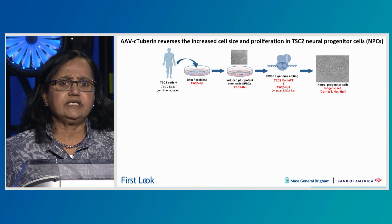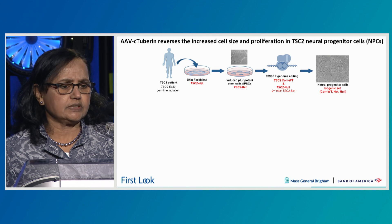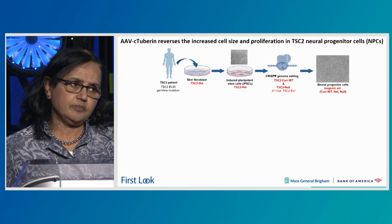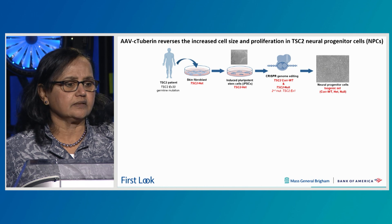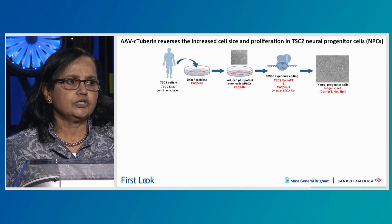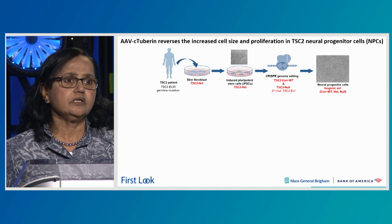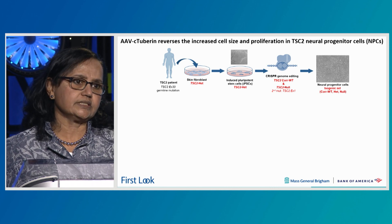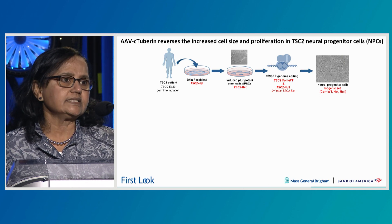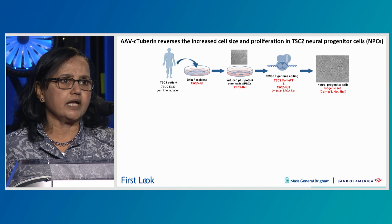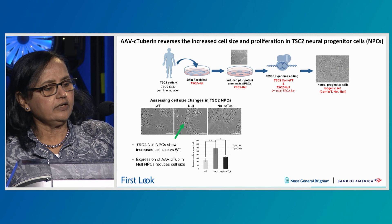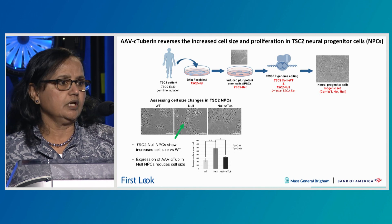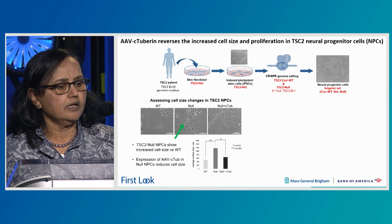We next tested AAV-C-tuberin in a stem cell model. What I'm showing here was generated in my lab from a TSC patient with a heterozygous mutation in exon 33. We obtained skin fibroblasts and made induced pluripotent stem cells, then used CRISPR gene editing to either correct back to wild type or introduce a second mutation to create a null mutation, and then generated neural progenitor cells — NPCs. This is an isogenic system with wild type, heterozygous, and null mutations from the same patient. You can see the null NPCs are clearly enlarged compared to wild type, and when you introduce C-tuberin, the cell size is rescued.